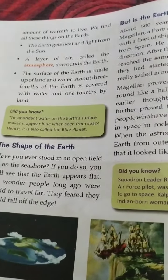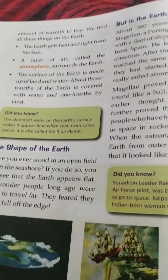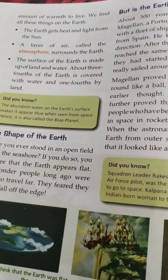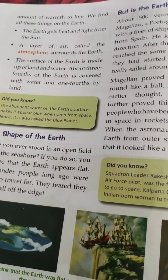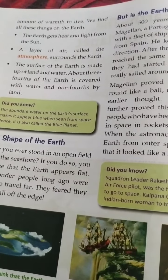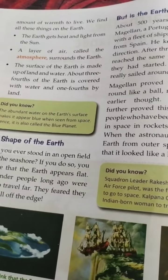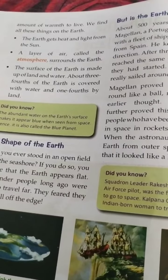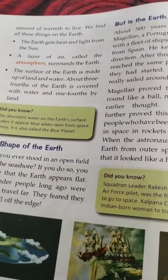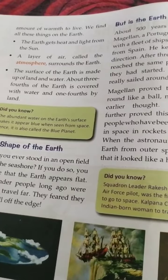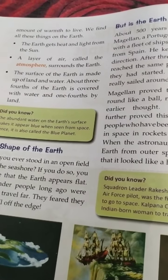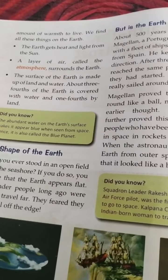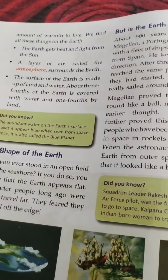The earth gets heat and light from the sun. So the sun is the source of heat and light, which is necessary for all living beings. Secondly, a layer of air which surrounds the earth is called the atmosphere. The air is also very necessary for all living beings. Without air, we cannot live.